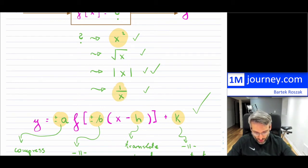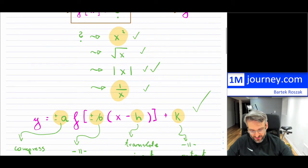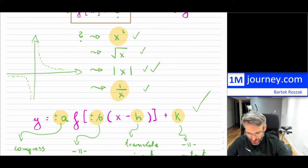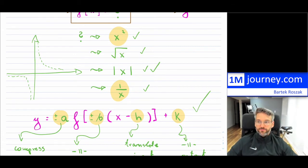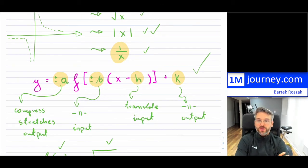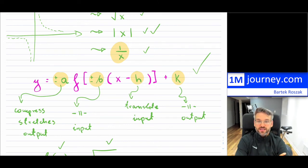The last one: 1/x as a parent. This is not the nicest of graphs — we have asymptotes at x=0, so the function blows up because x cannot equal zero. Within this framework: a will give compression and stretch, b will stretch or compress as well, and h and k will shift it around left/right or up and down.